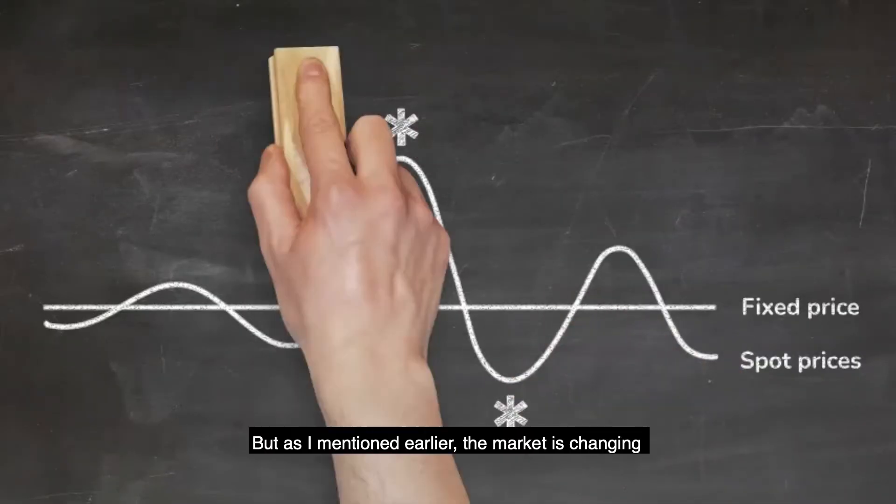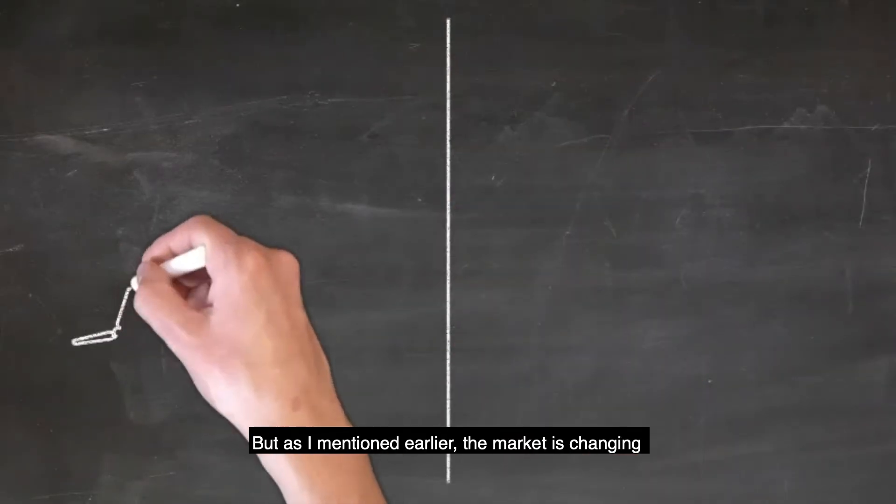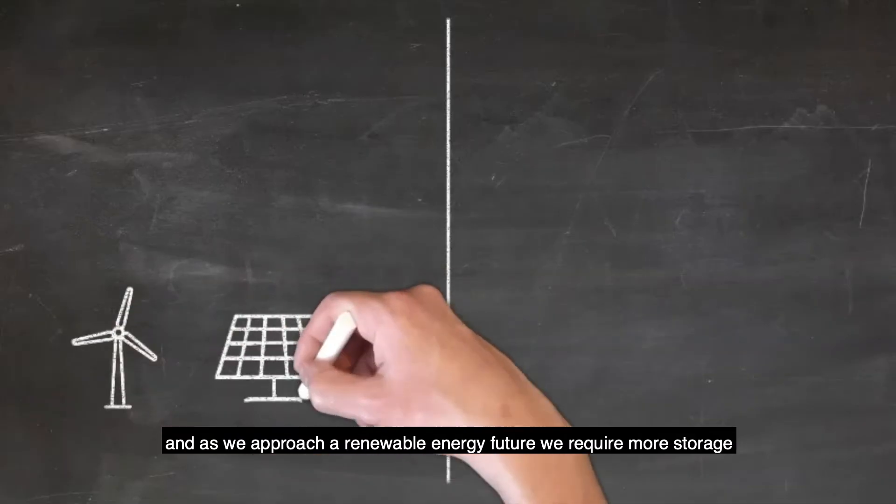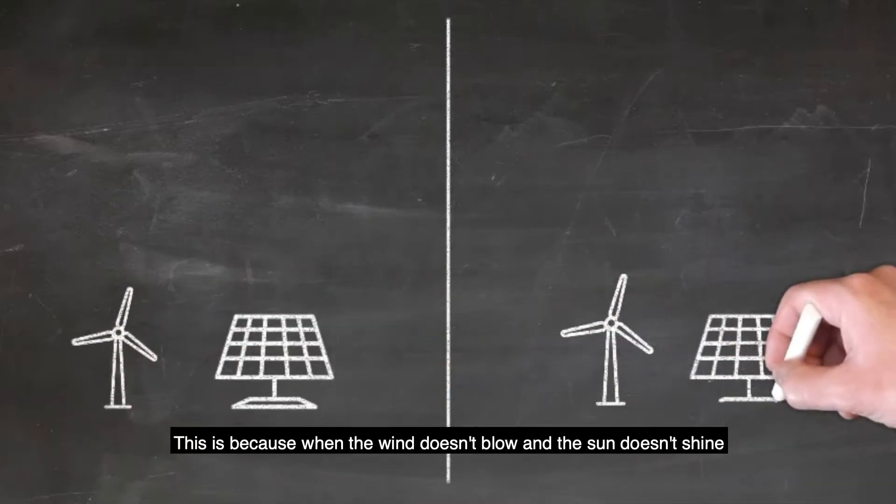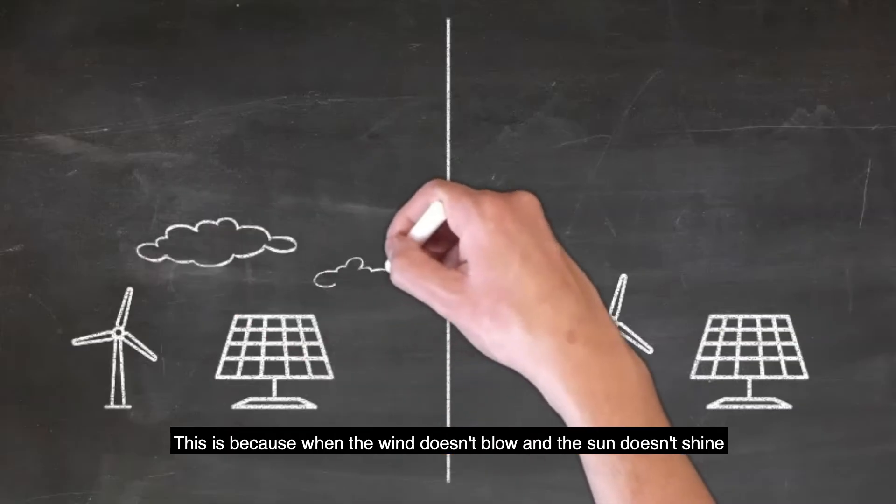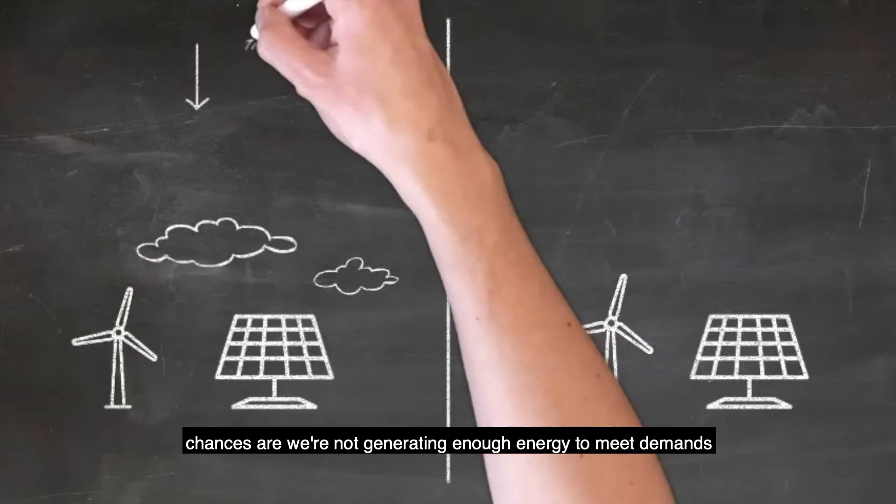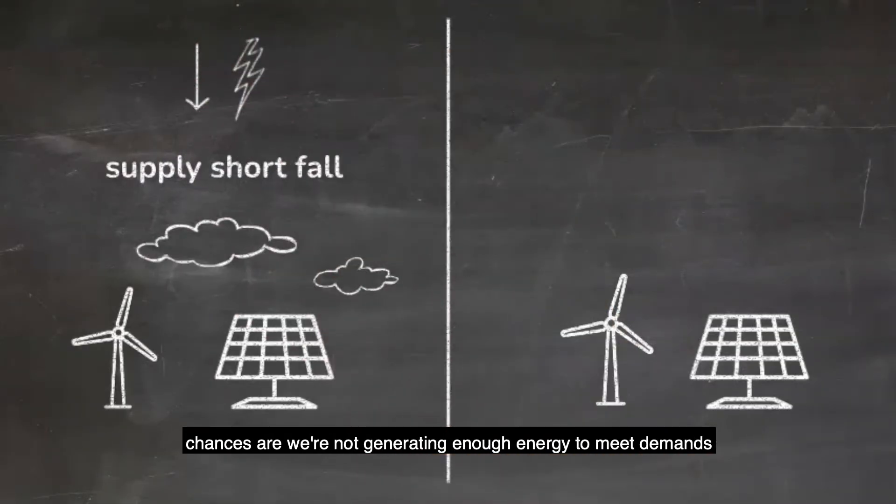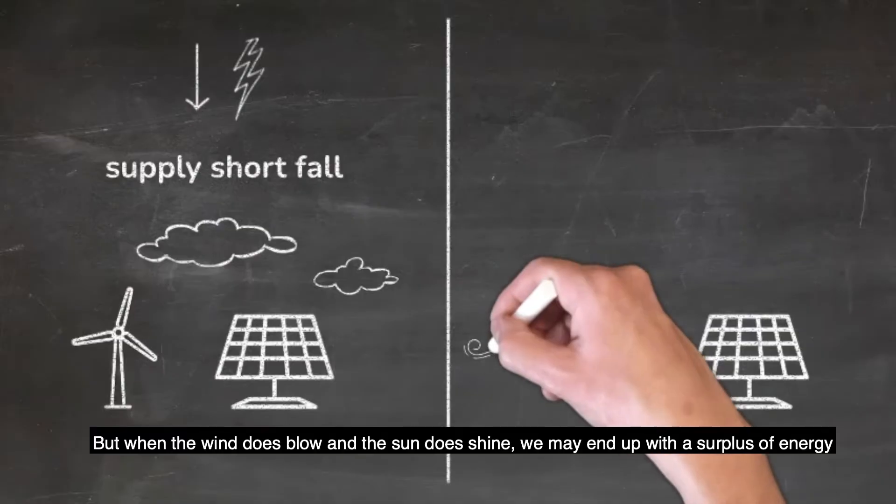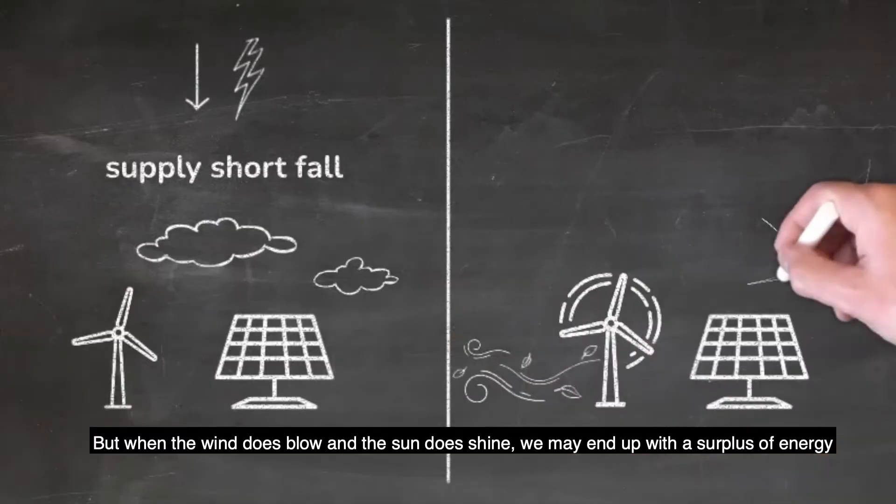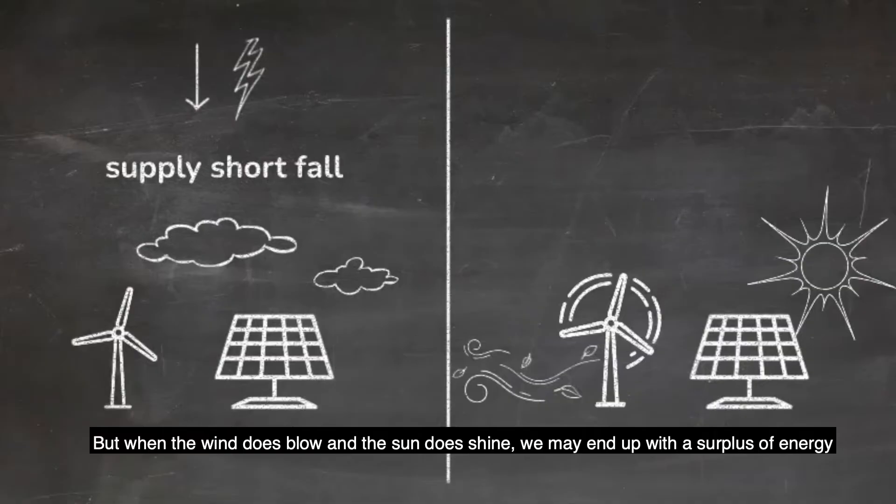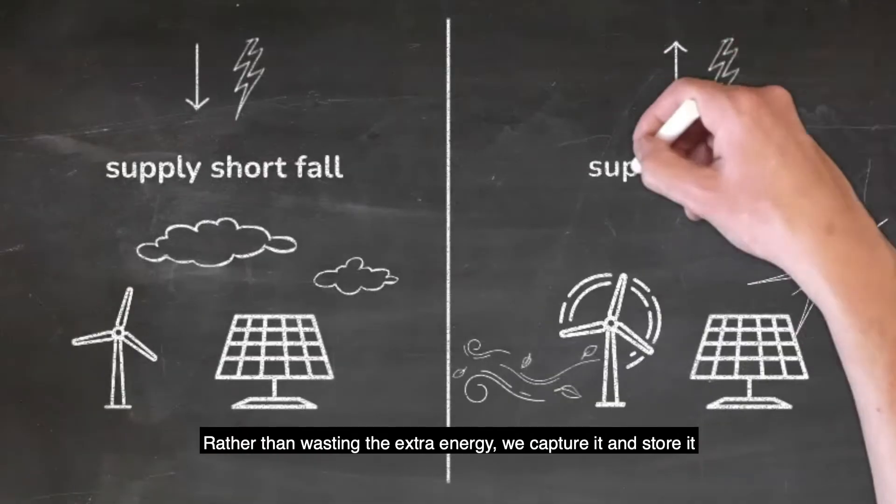But as I mentioned earlier, the market is changing and as we approach a renewable energy future, we require more storage. This is because when the wind doesn't blow and the sun doesn't shine, chances are we're not generating enough energy to meet demands. But when the wind does blow and the sun does shine, we may end up with a surplus of energy.